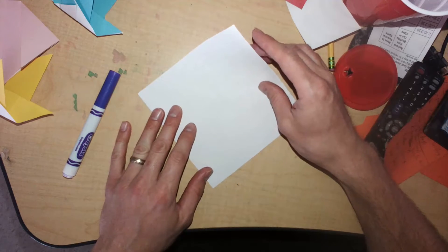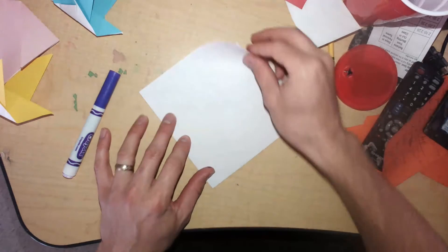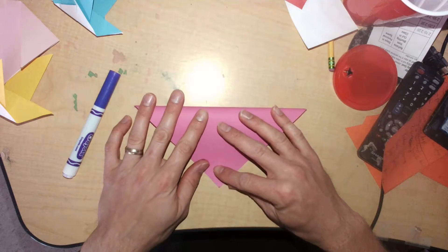We're going to start with a square piece of paper and we're going to fold it in half corner to corner to make it look like a triangle.